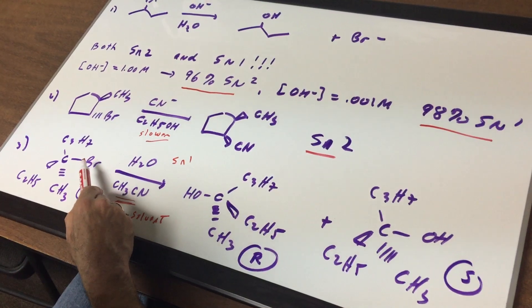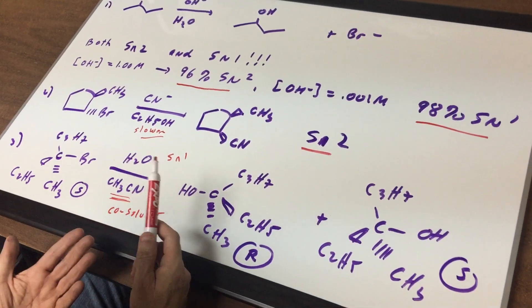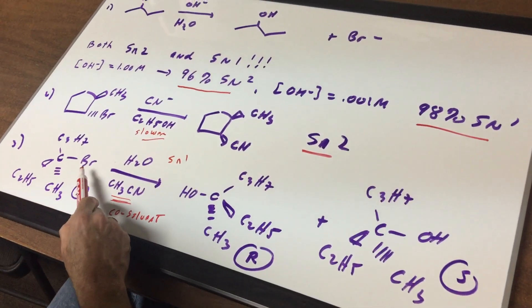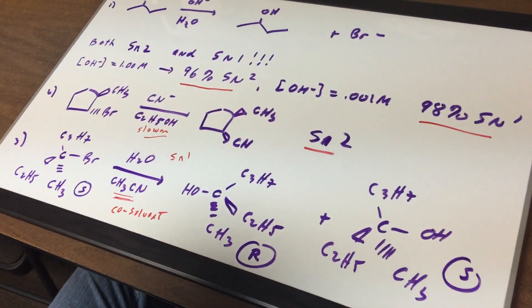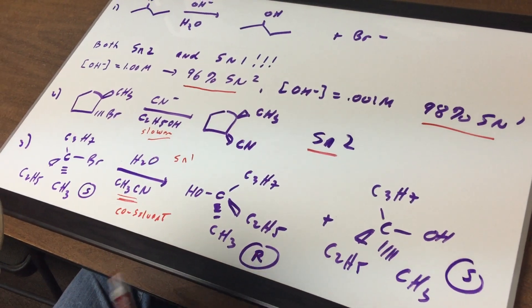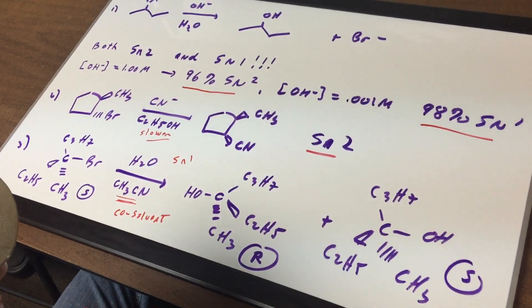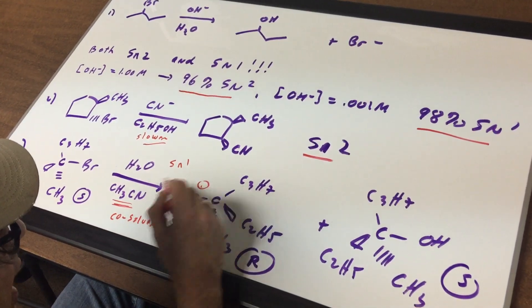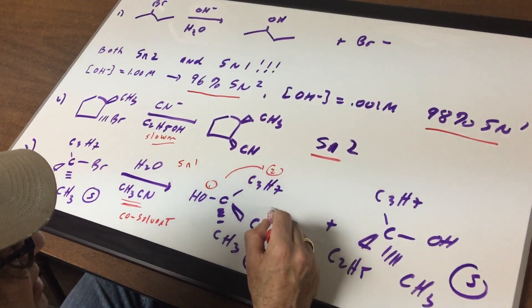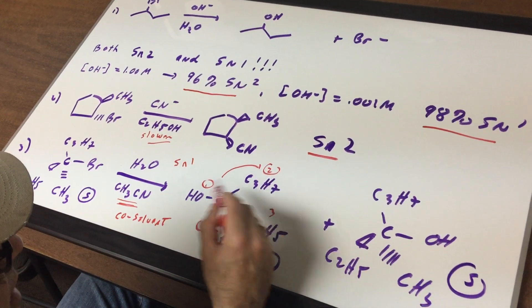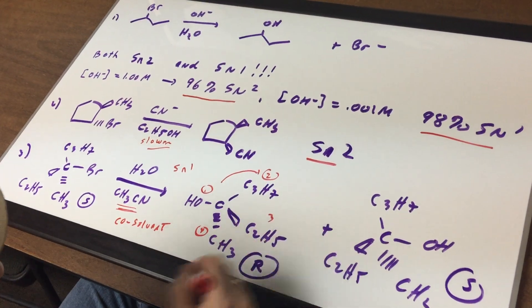So what we're going to do is we're going to form the carbocation. We're going to attack it from the top or the bottom. We start with the molecule that's S and we end up with two products, two alcohols. One's an R and one's an S. Just checking the stereochemistry. This is one, this is two, this is three. Number four is in perfect position. So that would be an R.